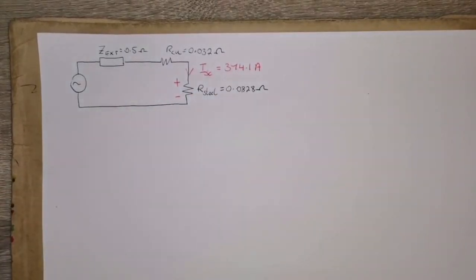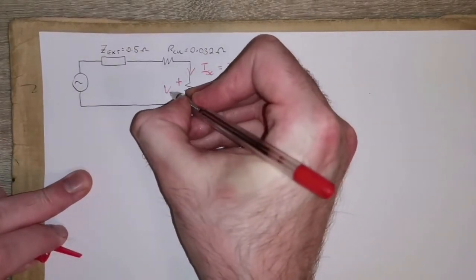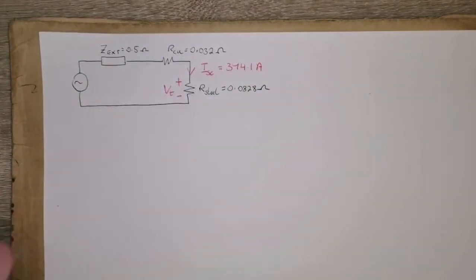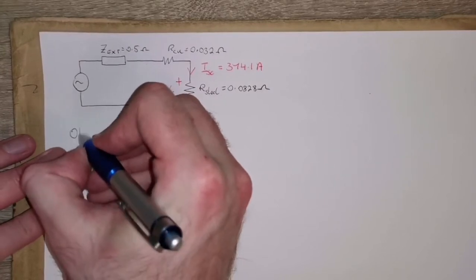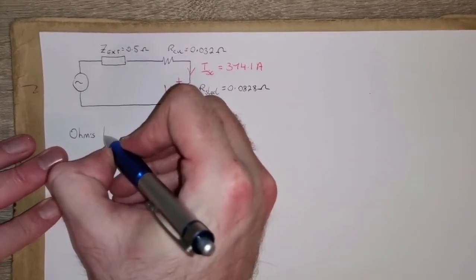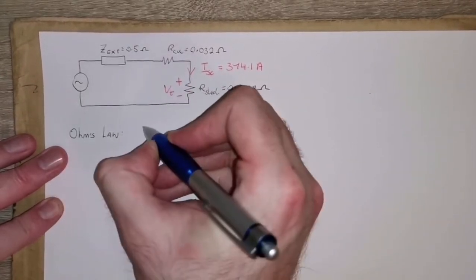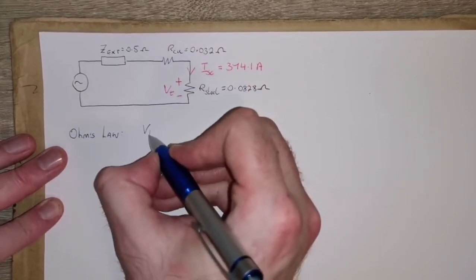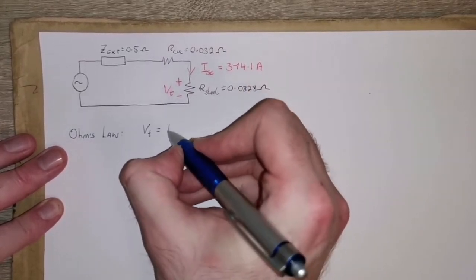We'll call it Vt, voltage for touch voltage. So again, just with Ohm's law, we can work out that the touch voltage is going to be the short circuit current multiplied by the resistance of the circuit protective conductor, which is the steel in this case.